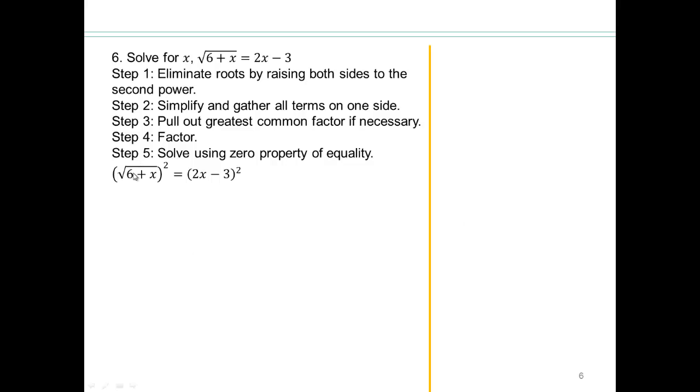Squaring the square root gets rid of the root. So that'll be 6 plus x. What about 2x minus 3 bracket squared? That's 2x minus 3 times 2x minus 3. So 2x times 2x is 4x squared. 2x times negative 3 is negative 6x. Negative 3 times 2x is negative 6x. Negative 3 times negative 3 is plus 9. So that's going to give you 4x squared minus 12x plus 9. So let's put it together.